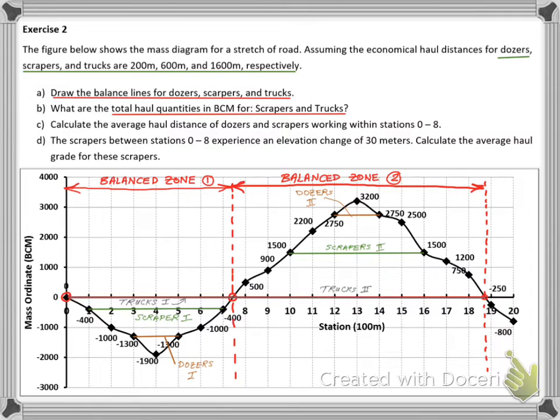Part B requires calculating the total haul quantities for the scrapers and trucks in both sub zones. Let's mark the haul quantity of each equipment in each zone as shown.